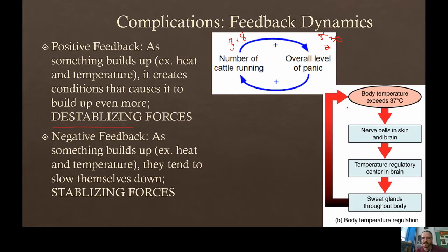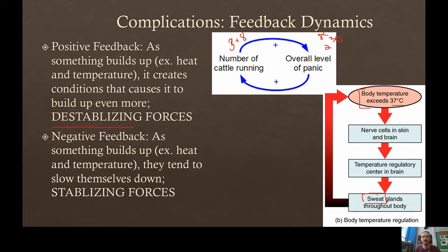Negative feedback is the opposite: as something builds up, it tends to slow itself down — a stabilizing force. Positive feedback is destabilizing, negative feedback is stabilizing. An example of negative feedback is your body. If you're jogging on a hot day, your body begins getting hot — exceeding 37°C (98°F). As your temperature rises to 99–100 degrees, cells in your skin and brain detect this and trigger sweating. The moisture on your skin, combined with wind, cools you off. As your body gets hotter and hotter, it regulates itself to shut down that heat buildup. That is negative feedback.